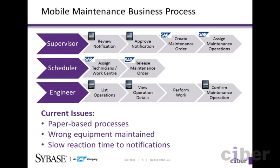The supervising engineer is responsible for reviewing those notifications and deciding whether they merit further investigation. The next concept, the maintenance order, roughly equates to a job and is associated in our scenario with a piece of equipment which must be maintained. The maintenance operations are the individual tasks which must be completed in order to close out the maintenance order or job. The next role is the scheduler, who assigns the maintenance operations or tasks to work centres. The work centre dictates who the operation is assigned to. The scheduler checks everything and releases the maintenance order, which sends the operations out to the mobile devices based on work centre.